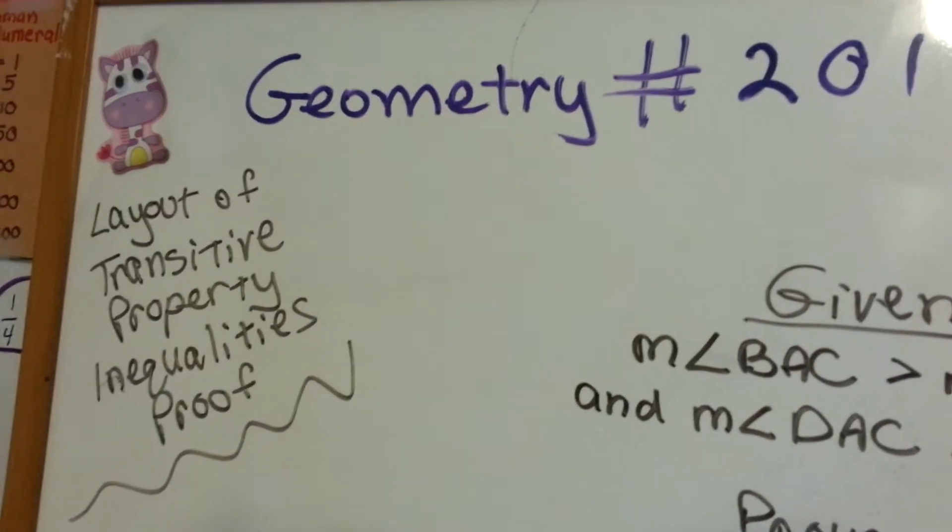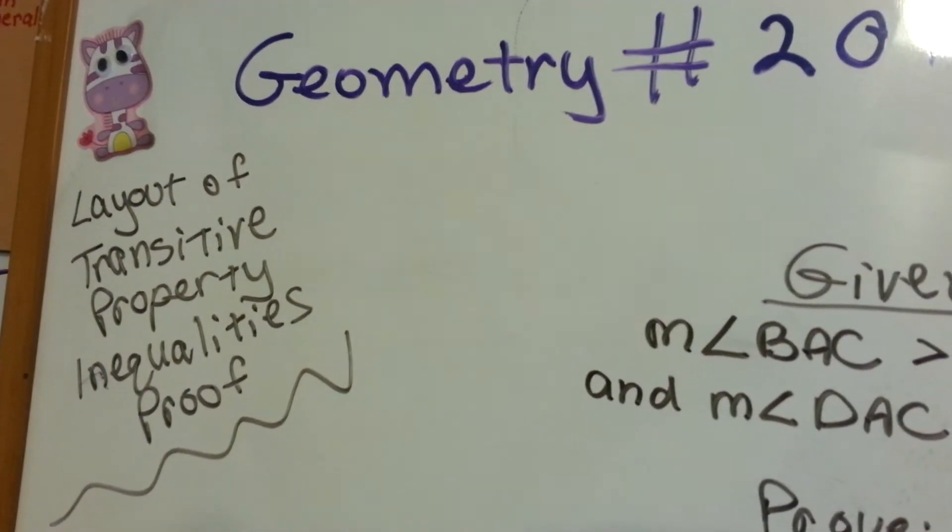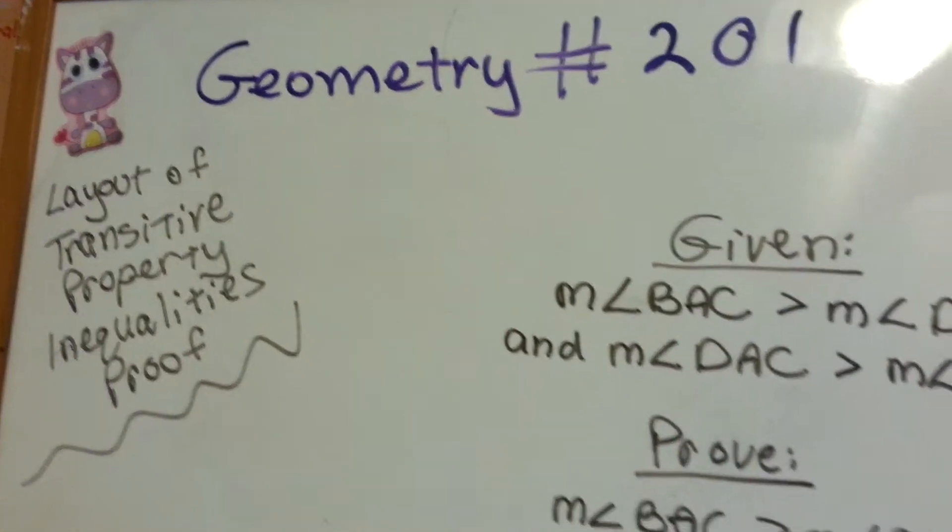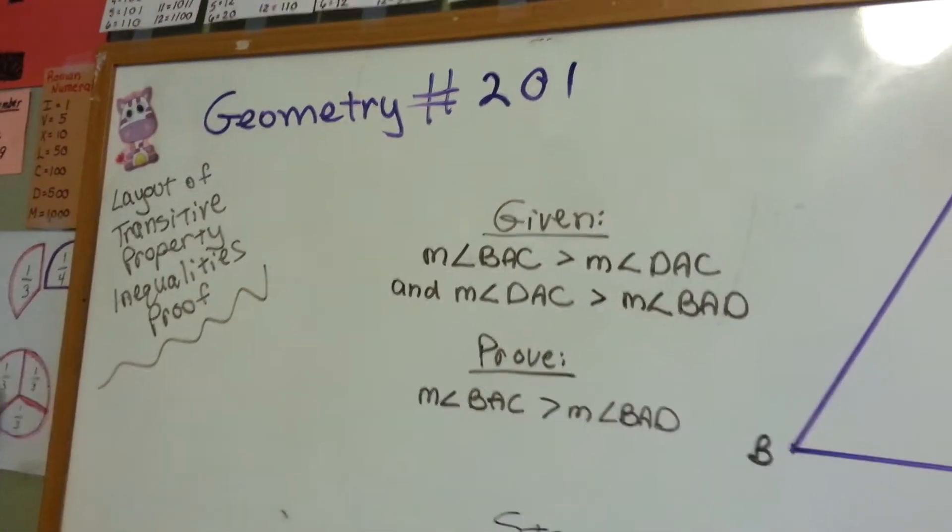Geometry number 201. This is a layout of a transitive property inequalities proof, a quick short one, just to show you what we did in the previous video number 200.